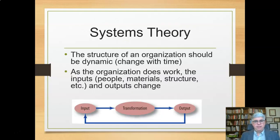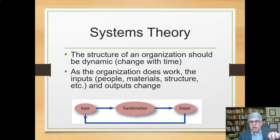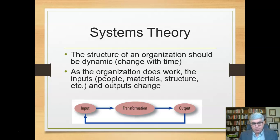The last organizational theory to look at is systems theory. We've touched on systems theories before, but the core idea is that the structure of an organization should be dynamic — meaning it changes with time. You start off with inputs: people, a mission, a skill set, and needs. Then you have people work together, producing outputs — the services and products the organization is supposed to deliver. In systems theory, this output then affects the input: it affects people's attitudes toward what they're doing, they learn how to do things better, they see what the mistakes were, and they want to do things differently.